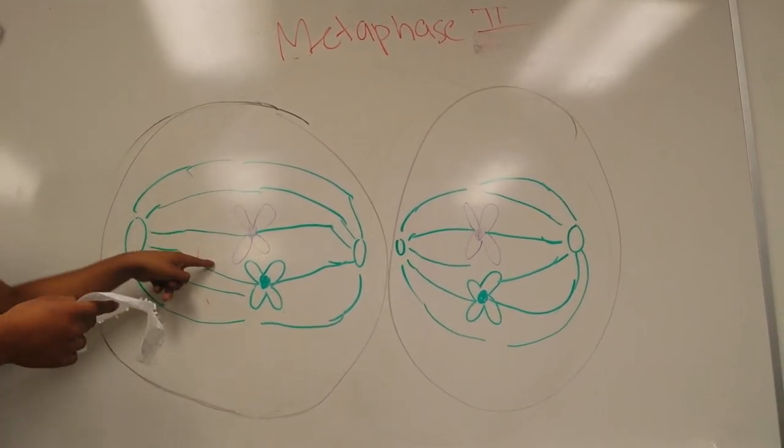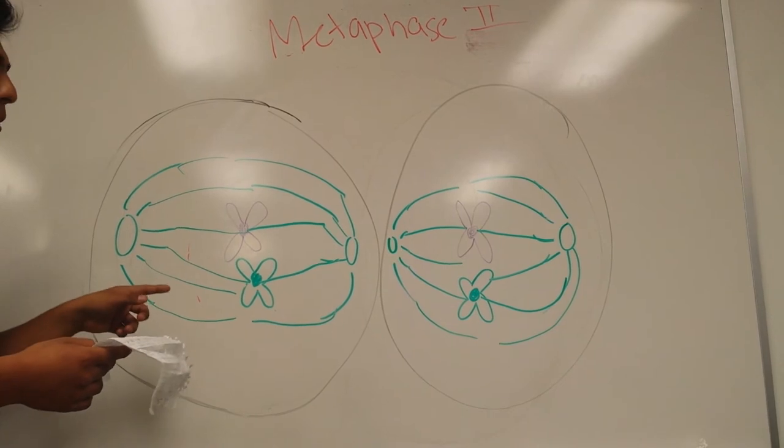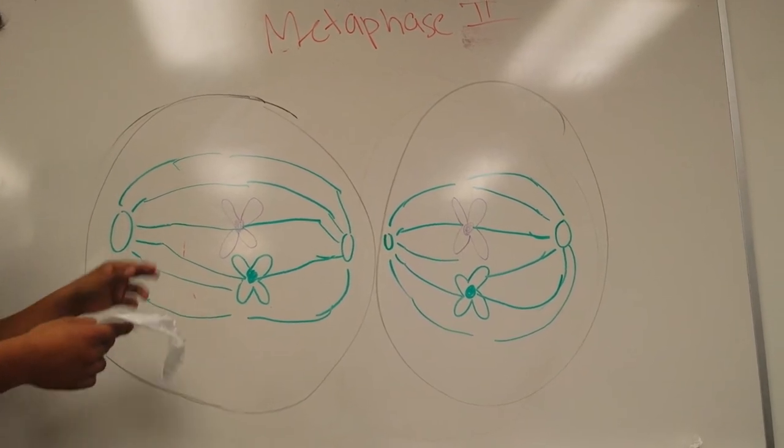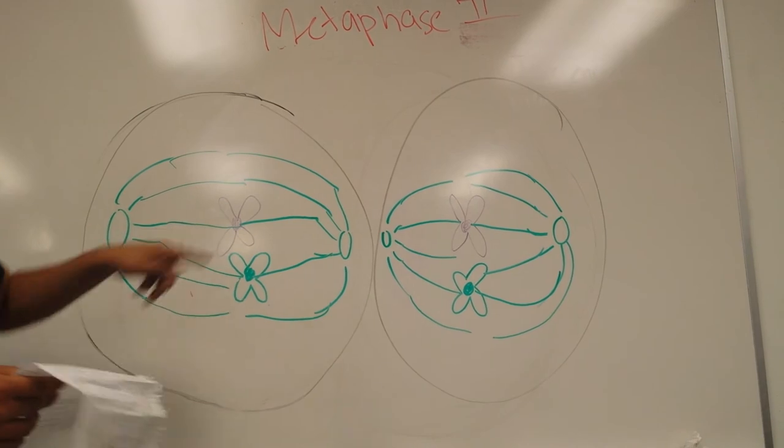During metaphase 2, the chromosomes line up along the middle but no longer as homologous pairs. Instead, they are haploids. Notice that the spindle fibers have attached to the centromere.